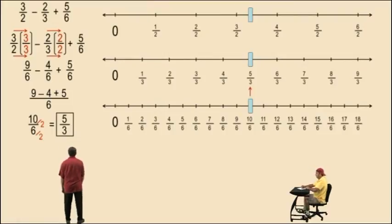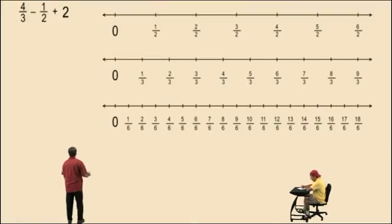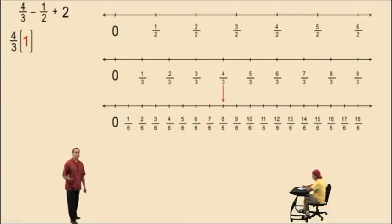Now, let's try this problem. 4 thirds subtract 1 half plus 2. Now, 4 thirds, let's change it to have a denominator of 6. 4 thirds is equivalent to 8 sixths. And so let's multiply 4 thirds by 1. But what form of 1 do we use? In this case, we use 2 over 2 because 3 times 2 is 6, and that's what we want in the denominator. 4 times 2 is 8, and so we get 8 sixths.